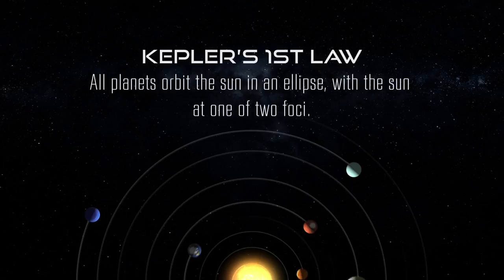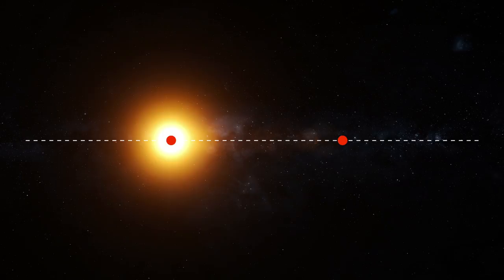Kepler's first law states that all planets orbit the sun in an ellipse, with the sun at one of two foci. Let's make this more clear. Let's start by examining what is an ellipse. To make an ellipse, we need foci. Foci is simply the plural form of focus, and they are the two defining characteristics of an ellipse.